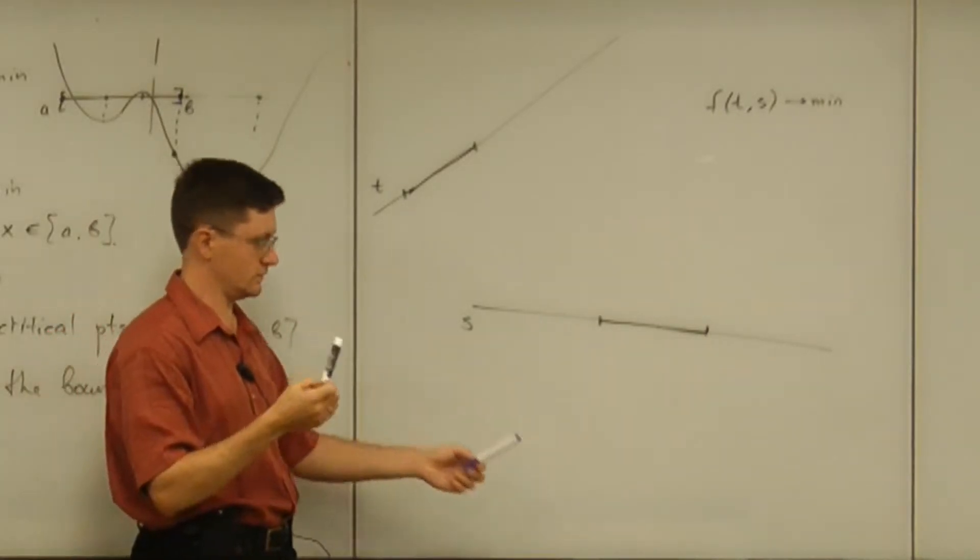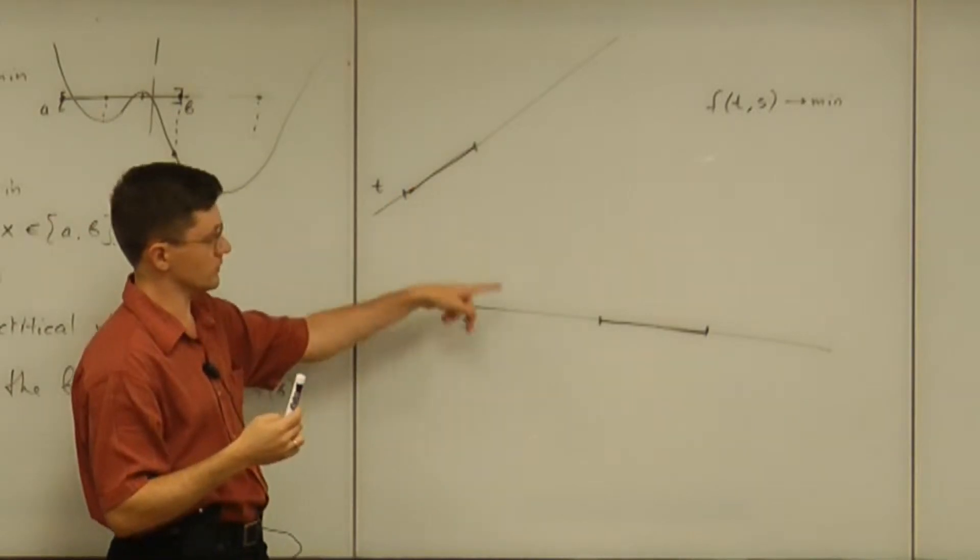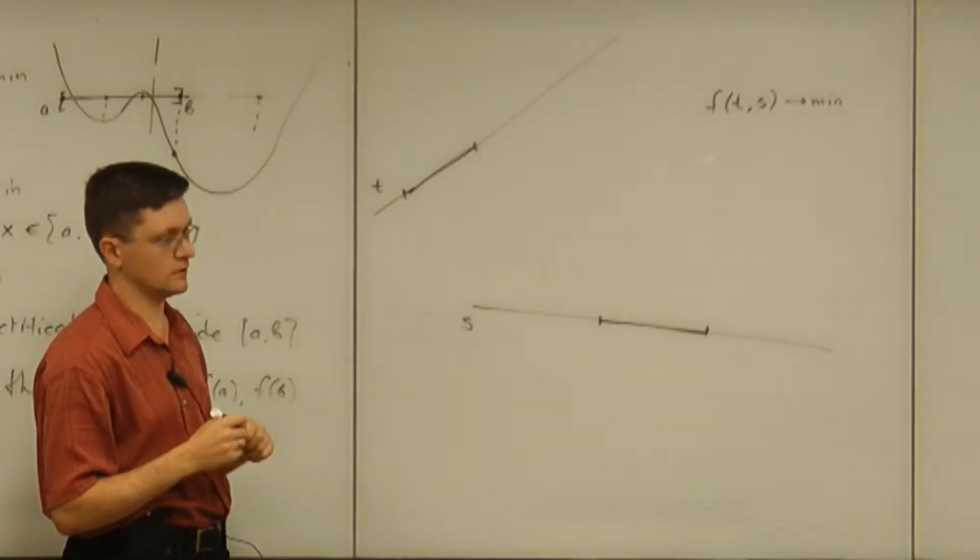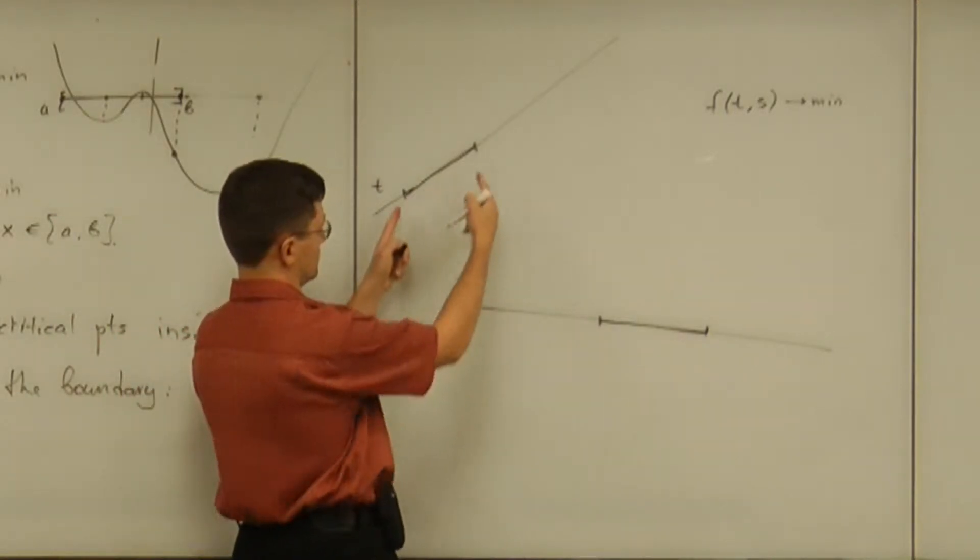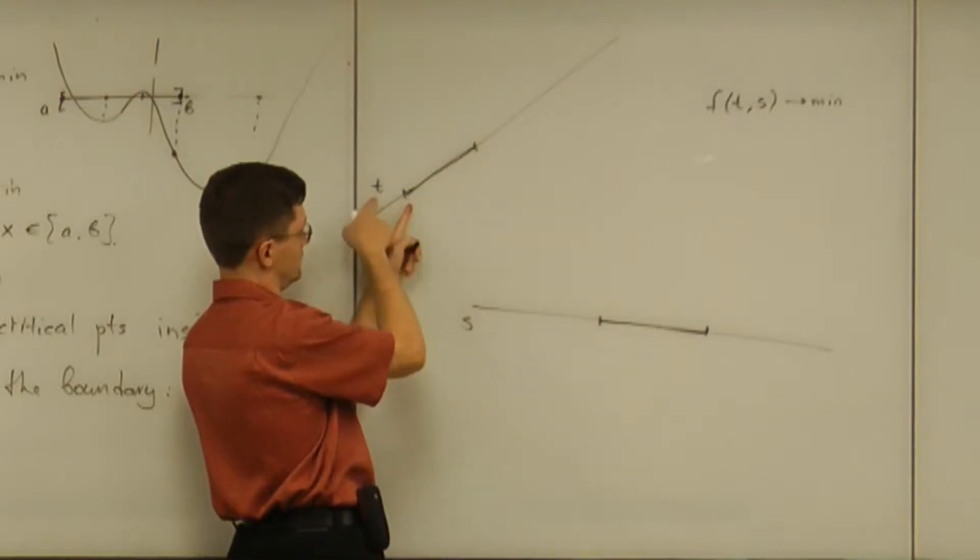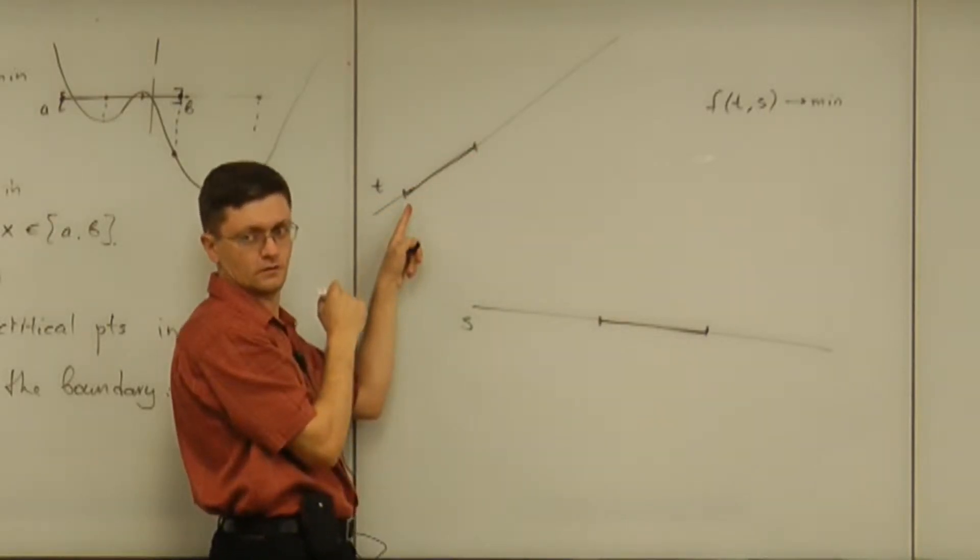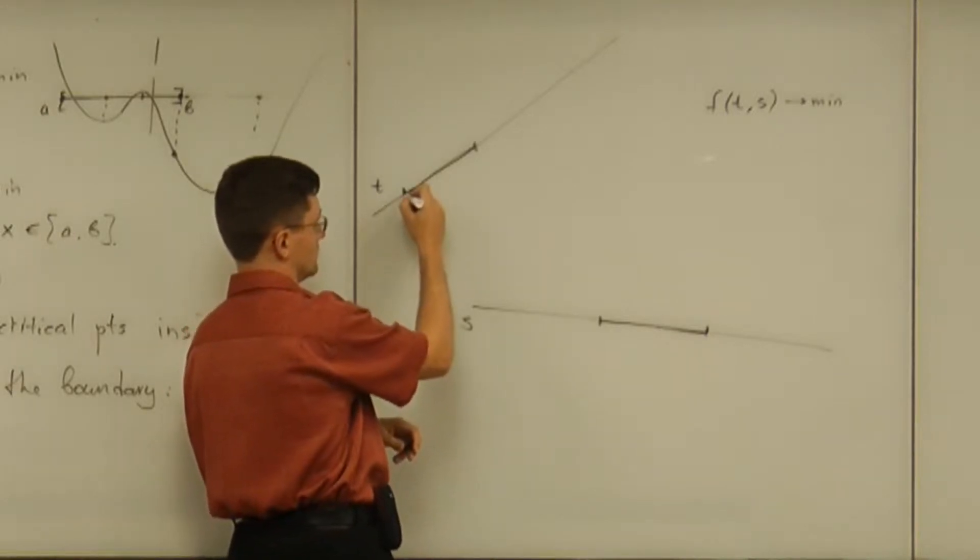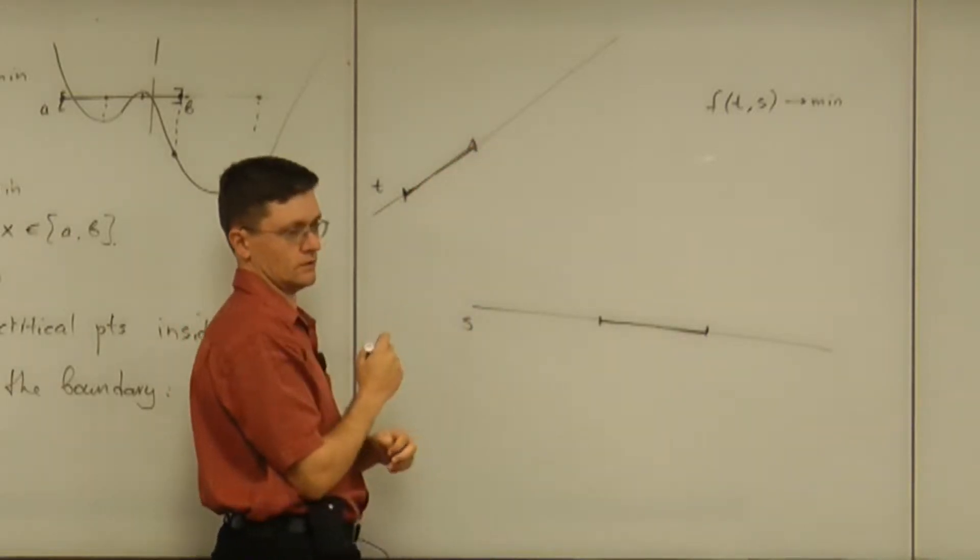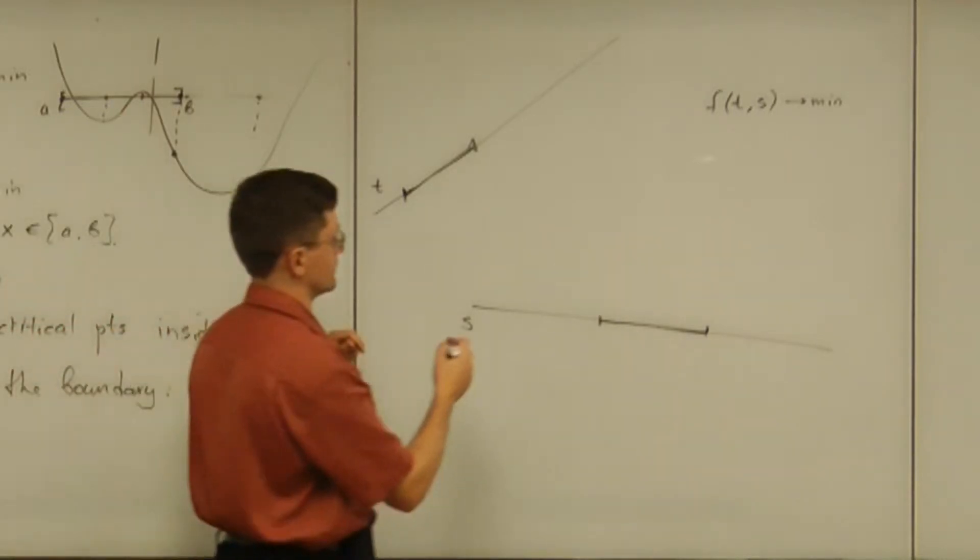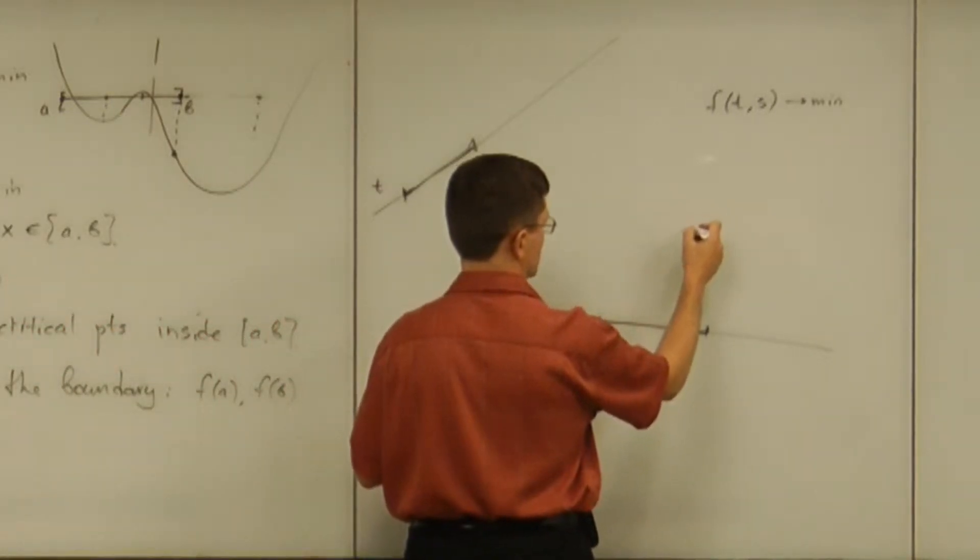So, how would that question change the algebraic setup? Well, the setup is that the condition being here on the segment provides restriction on t. So, t is allowed to take values only within this interval, which is kind of analog of calculus one obstruction. Right?